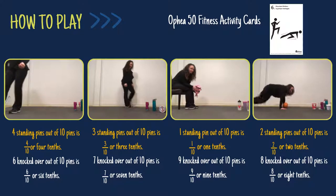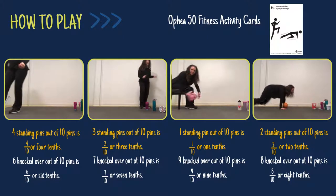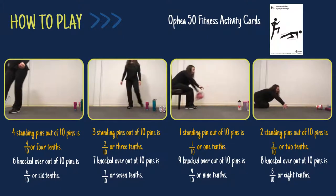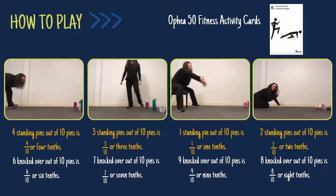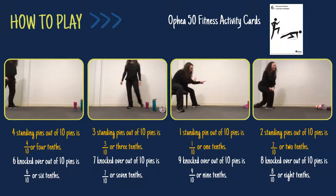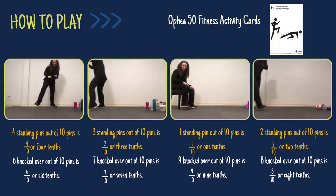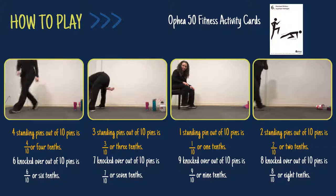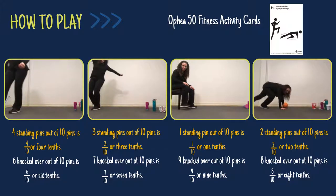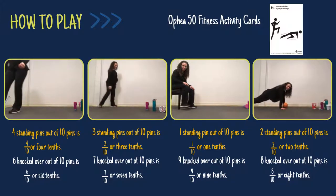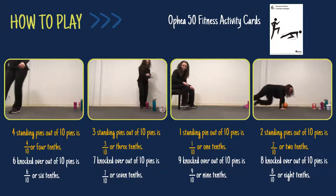For each attempt at knocking over the items, the learner can explore a different standing position, including balancing on one leg or standing backwards to throw through the legs. You can even incorporate Ophia's 50 Fitness Activity Cards as an exploration activity by having the learners complete different movements, such as mountain climbers, before throwing the ball.